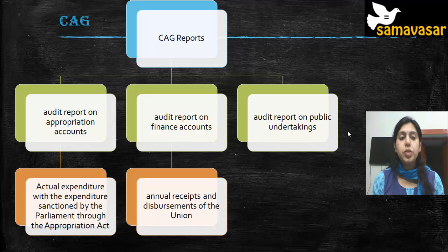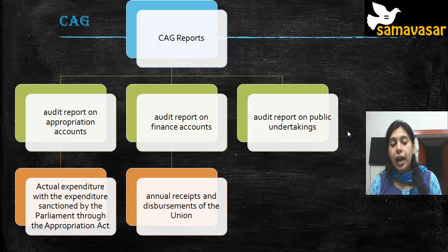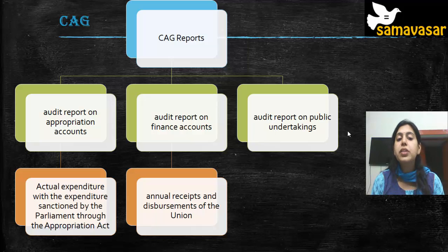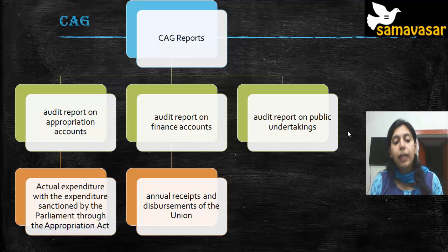The audit report on appropriation accounts compares actual expenditure with the expenditure sanctioned by parliament through the Appropriation Act. The CAG checks whether the actual expenditure matched what was sanctioned through the Appropriation Act — that is the audit report on appropriation accounts.